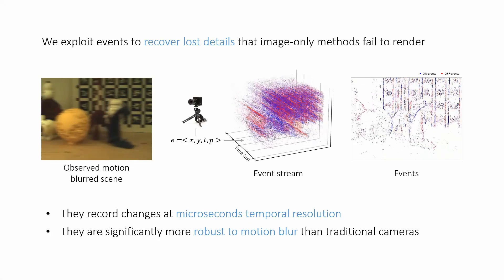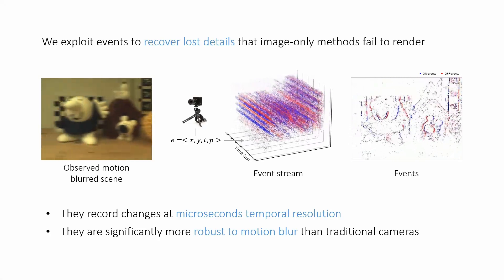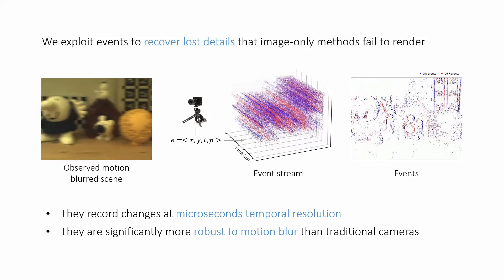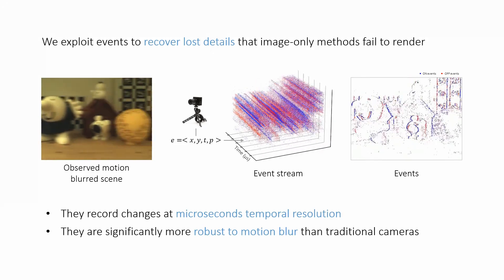As a result, event cameras are significantly more robust to motion blur than traditional ones, which makes them ideal for recovering radiance fields in scenarios involving motion.